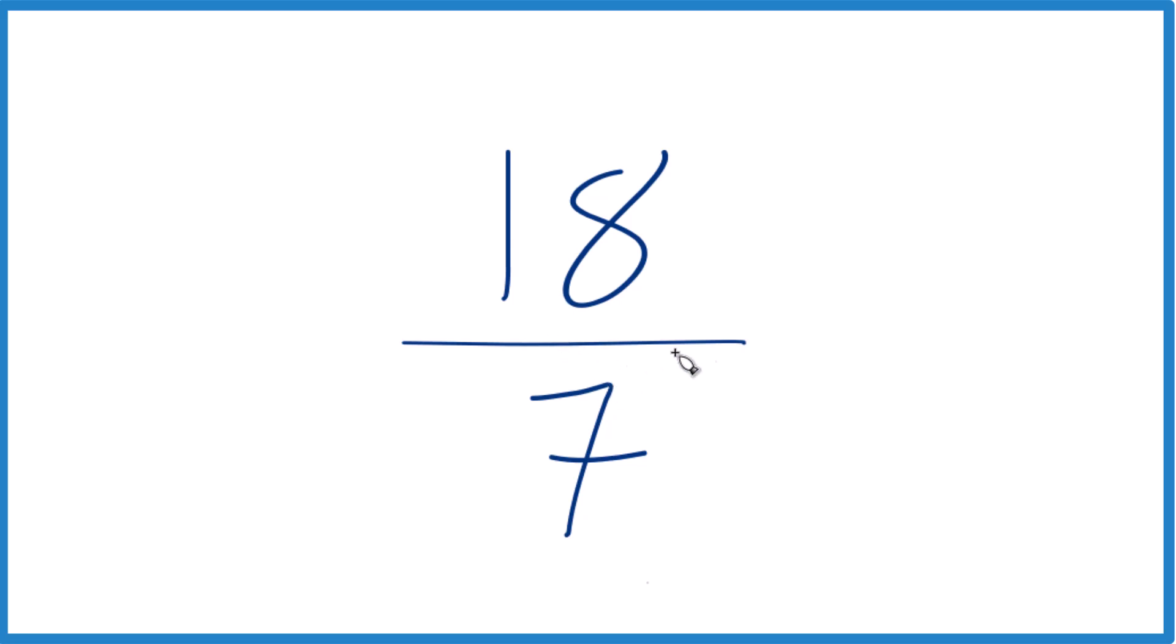But we can write it as a mixed number. Right now it's an improper fraction because the numerator, 18, is larger than the denominator, 7. So here's how we do that.